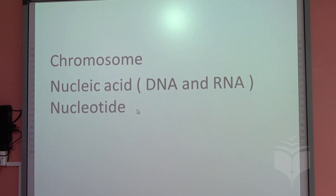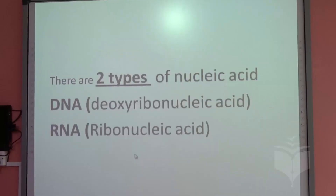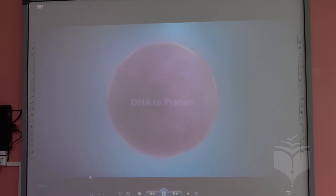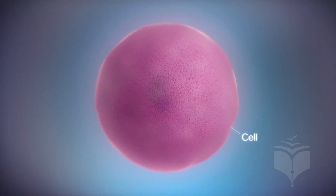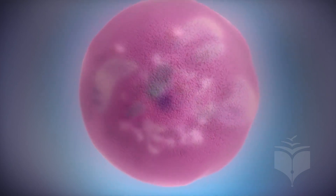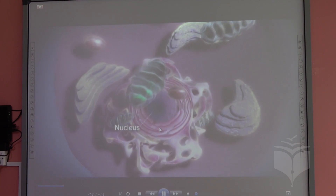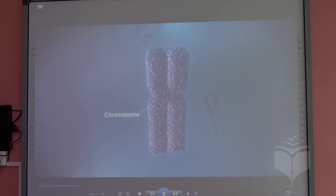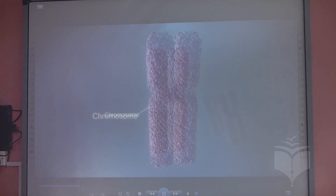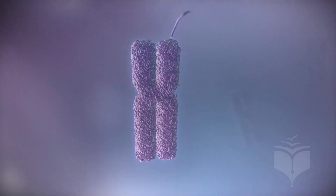Now let's look at a visual explanation. This cell found inside your body is made up of an important structure called the cell membrane. If you enter inside the cell, there is a very important part called the nucleus. If we enter inside this nucleus, we can find the chromosome. This is the shape of the chromosome, which is made up of a long line called nucleic acid — either DNA or RNA. Now let's see the shape of the DNA.